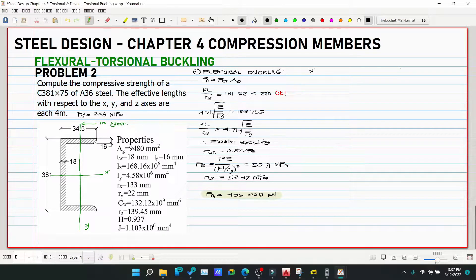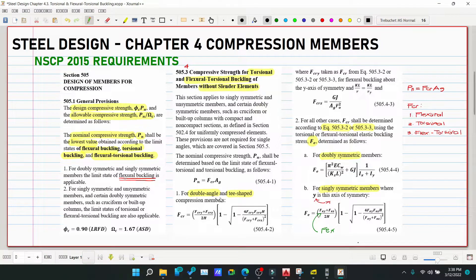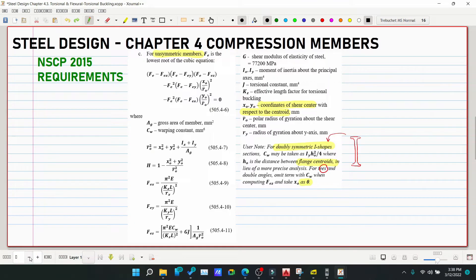Number 2, flexural-torsional buckling. Where does our section fit? It doesn't fit number 1, so it fits number 2, for all other cases. Our Fcr for Pn comes from here. For single symmetric members, since we have only one axis of symmetry on the x-axis. Let's copy that.